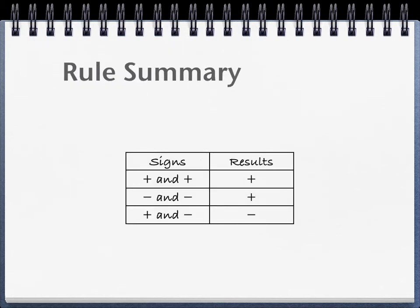So this little chart shows the summary of the rules so far. If you have a positive and a positive, it's positive. If it's negative and a negative, the result is positive. And if the initial numbers are positive and negative, then the results are negative.